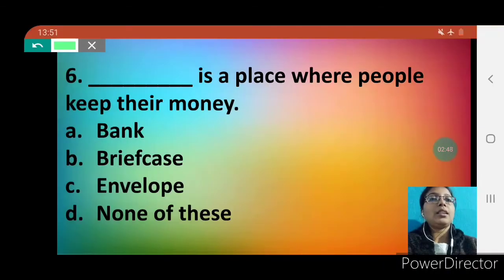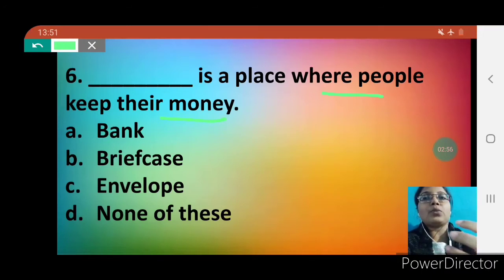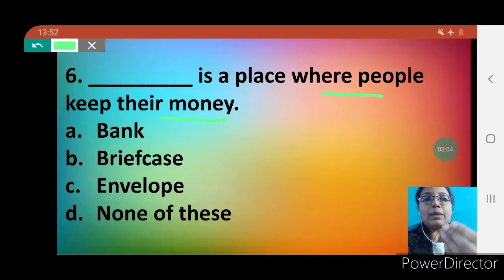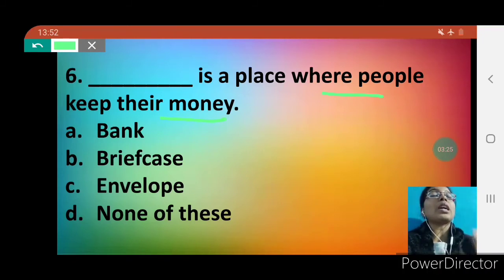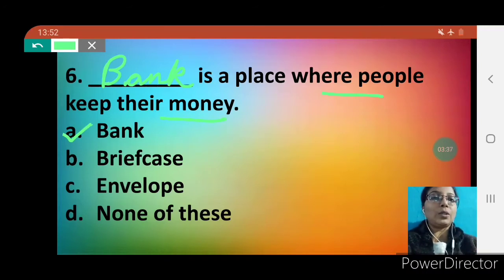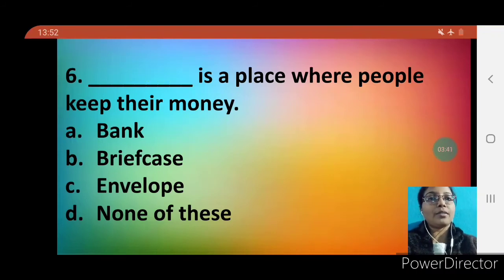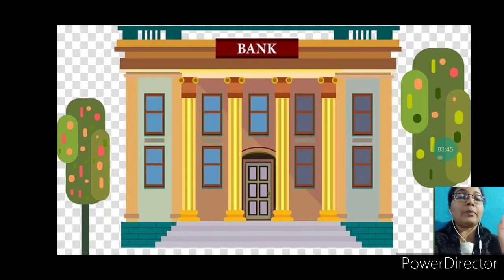Question number 6: dash is a place where people keep their money. Money is very valuable and we cannot keep so much money at home. Options are: A — bank, B — briefcase, C — envelope, D — none of these. We know that people keep their valuable money in a bank. So your correct option is A — bank. B-A-N-K. Bank is a place where people keep their money.